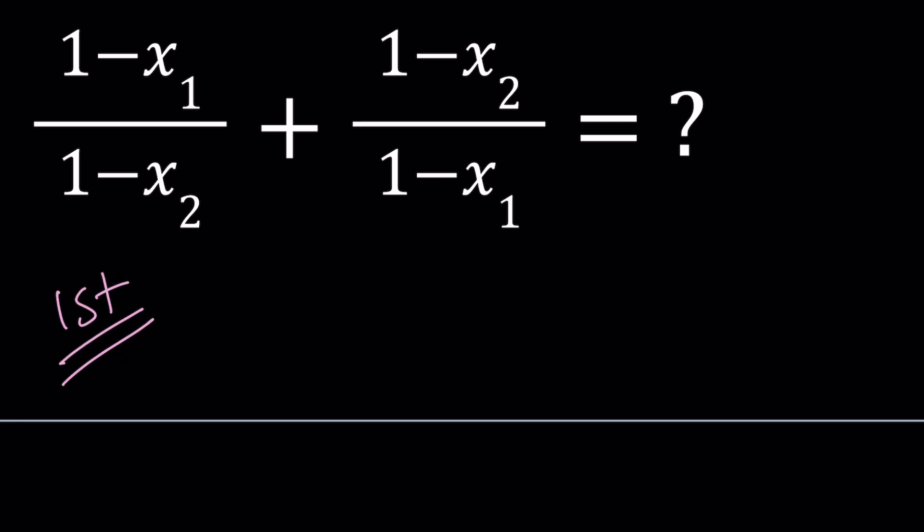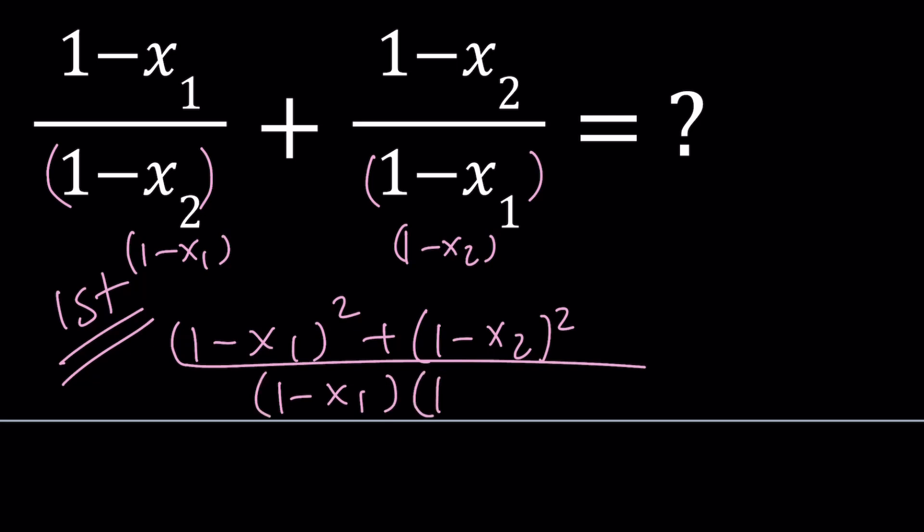So I'll make a common denominator. Let's multiply this by 1 minus x sub 1, and this one by 1 minus x sub 2, and of course the denominators and numerators. So we're going to get 1 minus x sub 1 squared plus 1 minus x sub 2 squared all over 1 minus x sub 1 times 1 minus x sub 2.